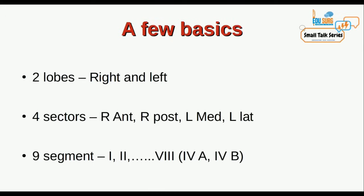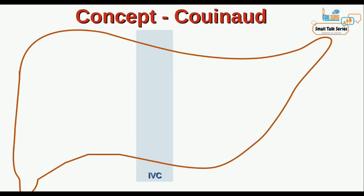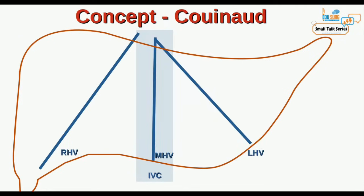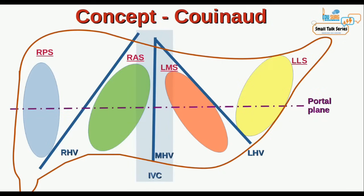Before we go into the trick, a small brief overview of the Couinaud classification. The liver is located anterior to the vena cava. The three hepatic veins — right, middle, and left — divide the liver into four sectors: right posterior and right anterior separated by the right hepatic vein; left medial and right anterior divided by the middle hepatic vein; and left lateral and left medial divided by the left hepatic vein. The plane where the portal vein bifurcates divides the liver into superior and inferior parts, so each sector is divided into two parts by the portal plane.